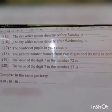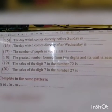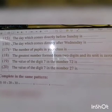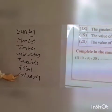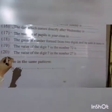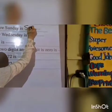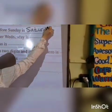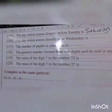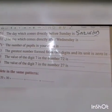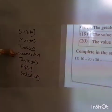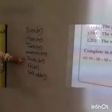Number fifteen: the day which comes directly before Sunday is Saturday. Number sixteen: the day which comes directly after Wednesday — good job — after Wednesday is Thursday.